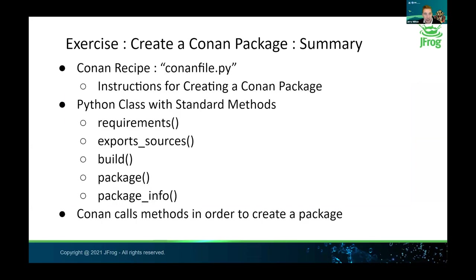To quickly summarize what we did: we showed the recipe format, what it looks like, and how it works. We walked through each of the standard methods for creating a package — you have requirements, export_sources which gather sources, then build and package the artifacts, and describe what you built with package_info. There are a handful of additional optional methods which you can read about in the docs and see in other training sessions. Conan calls these methods in a particular order, though there are other workflows where you can call just the build method or just the source method. This is the core process for creating a package from scratch.